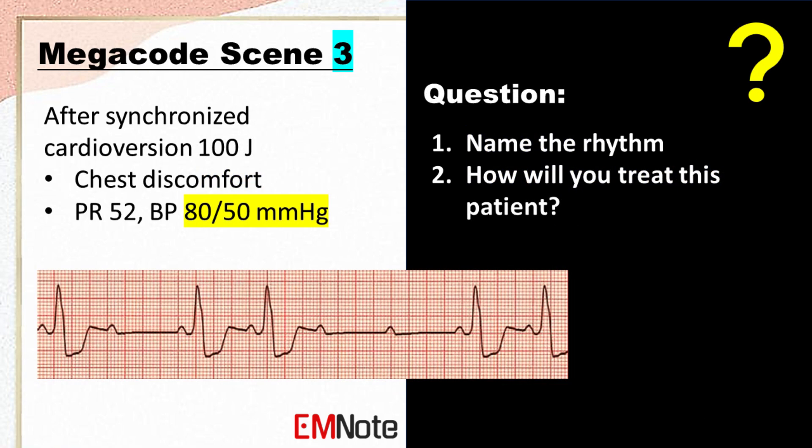After synchronized cardioversion with 100 joules, the patient is experiencing chest discomfort. His pulse rate is 52 beats per minute and his blood pressure is 80/50 mmHg. Name the rhythm. How will you treat this patient?